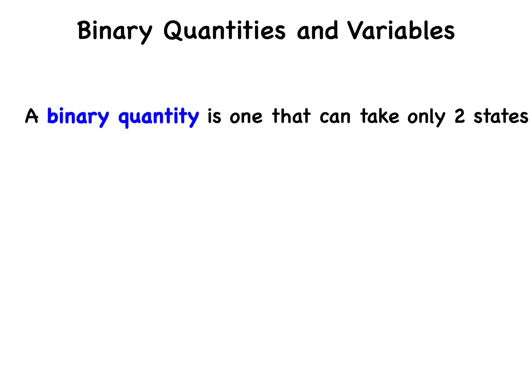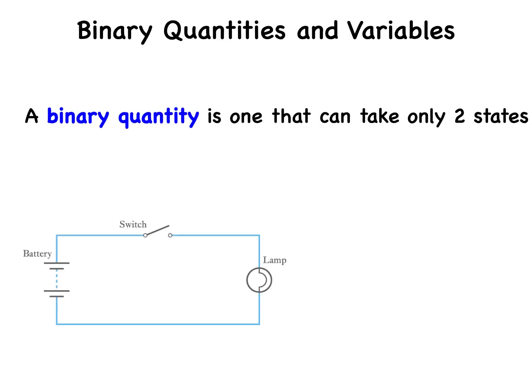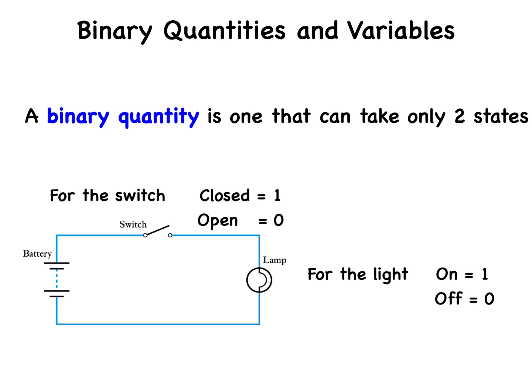A binary quantity is one that can take on only two states. This is a binary arrangement: a switch in series with a power source and a light. The switch can be open or closed; the light can be either off or on. We can now assign a binary number to the switch and the light. For the light: on equals 1, off equals 0. For the switch: closed equals 1, open equals 0. In order to analyze these binary arrangements, we devise a truth table.